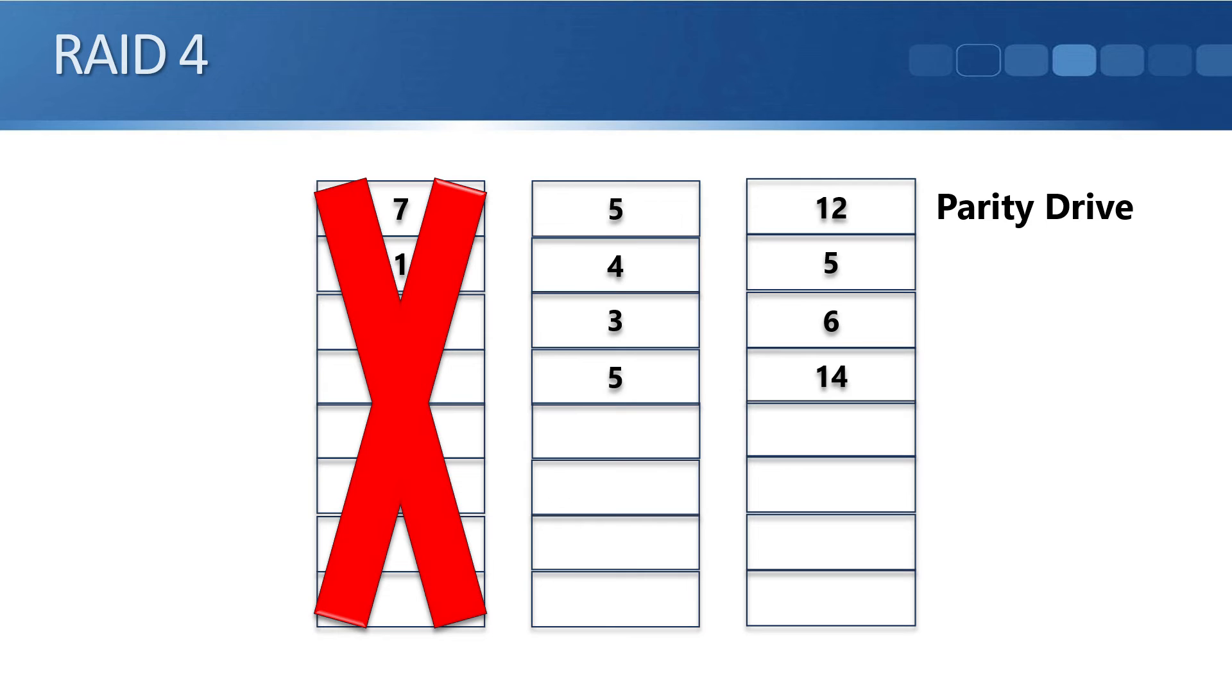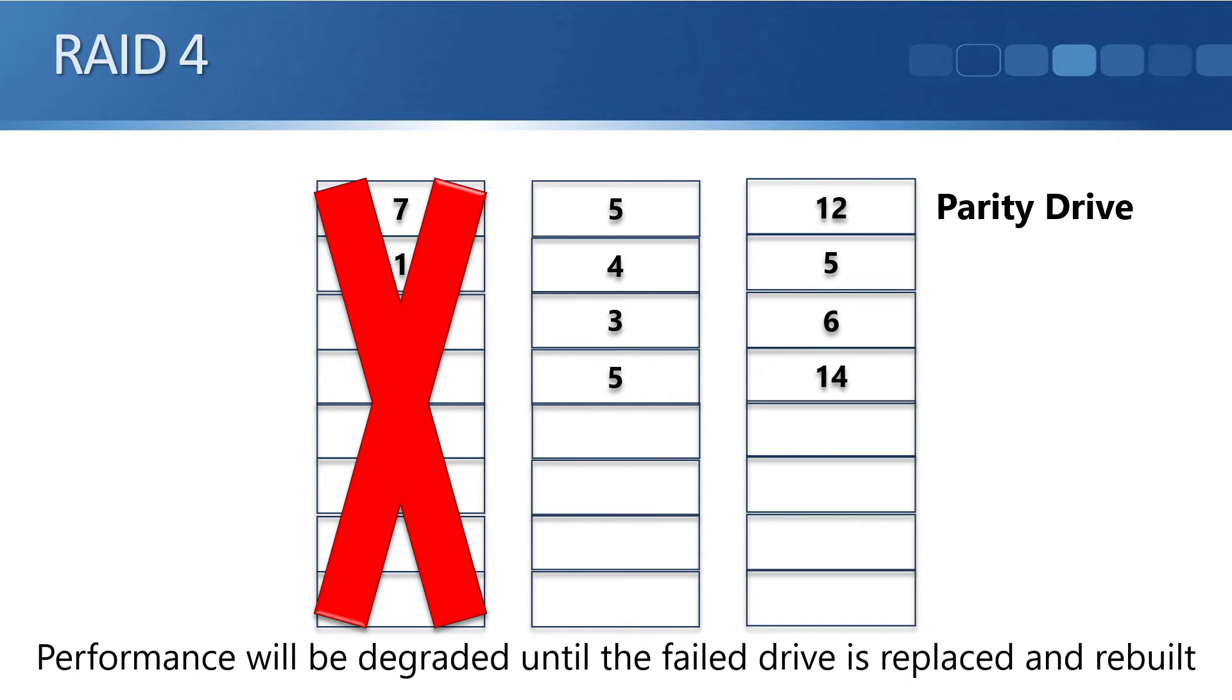Then let's say that the first drive in the set fails. Well, when that happens, we can still read data from the set because 12 minus 5 is 7. It must have been a 7 that was in the first part of that disk. And then 5 minus 4, it must have been a 1 there, and so on. The performance is going to be degraded until the failed drive is replaced and rebuilt. But while we do have a failed drive there, we've still got a working copy of the data.